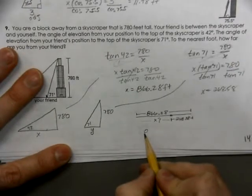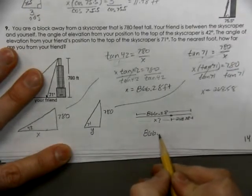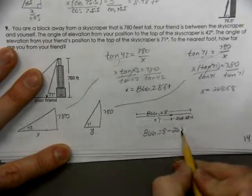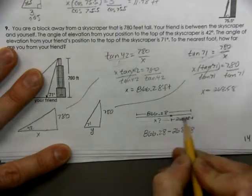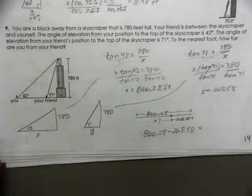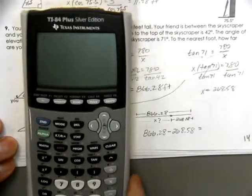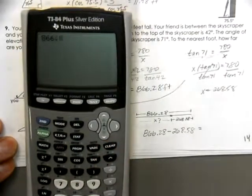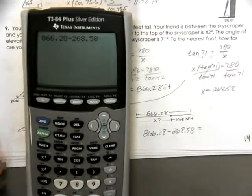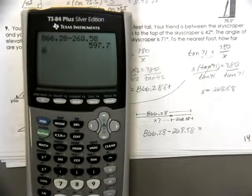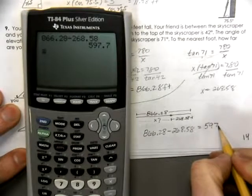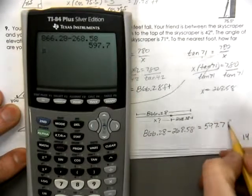So, we're going to take the 866.28. That's the whole distance. We're going to minus the 268.58. That's this little bit here. That's going to give us the left over amount. So, we're going to get 866.28 minus 268.58, and we're going to get 597.7 feet.